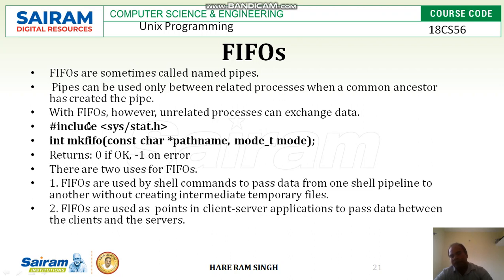What is the prototype to create a FIFO? The prototype used to create a FIFO is mkFIFO. Its signature is: int mkfifo(const char *pathname, mode_t mode), with the header include sys/stat.h. Using mkFIFO, we can create a FIFO. It has two arguments: one is the pathname, and another is mode.